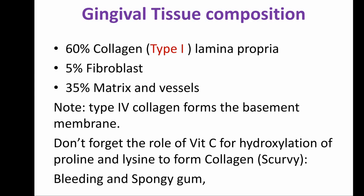Gingival tissue composition: 60% collagen type 1, which forms the lamina propria; 5% fibroblasts; 35% matrix and vessels. The periodontal ligament and bone are also type 1 collagen, but the type 1 collagen in gingiva differs from that in bone. Type 4 collagen forms the basement membrane — remember 'four and floor' as a mnemonic. Vitamin C is important for the hydroxylation of proline and lysine to form collagen; a shortage of vitamin C causes scurvy, characterized by spongy, bleeding gums due to fragile capillary walls.